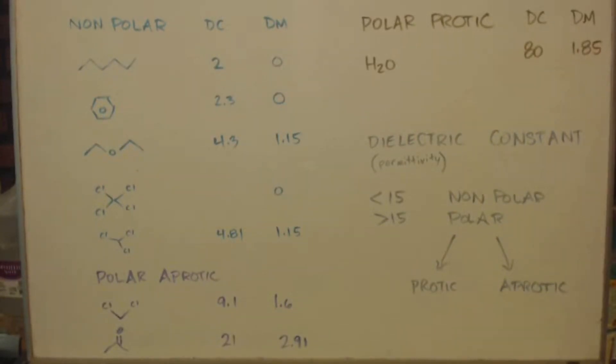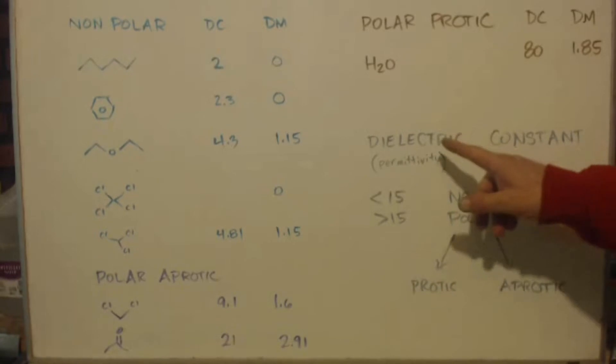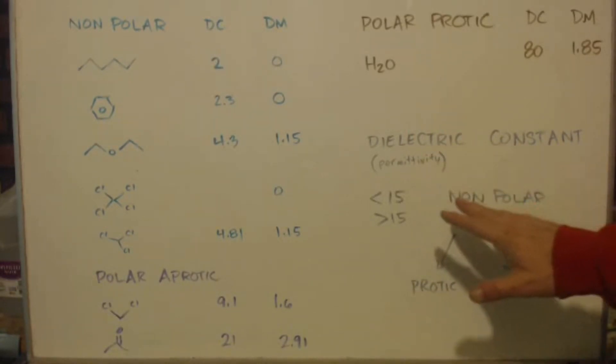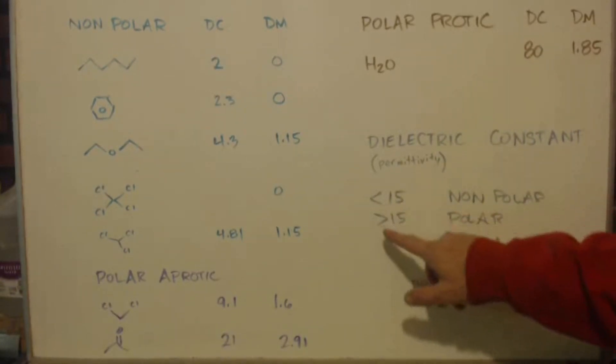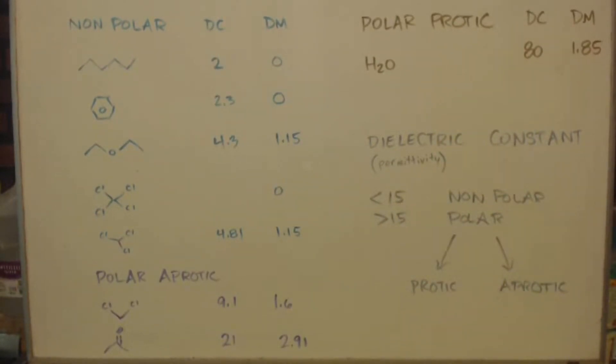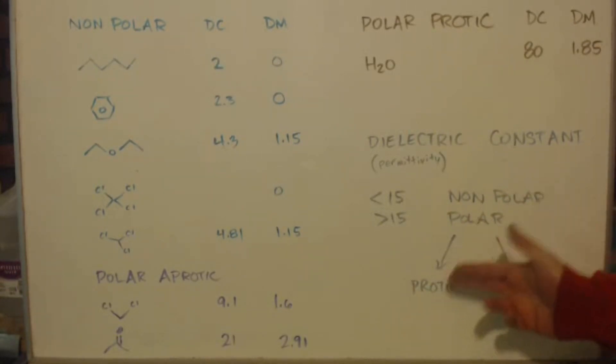So what makes a polar or non-polar solvent? Well, one of the main things, but there's a bunch of factors, is the dielectric constant or the permittivity of that solution. This is not a, there are exceptions to the rule, but anything less than 15 is considered non-polar. Anything greater than 15 is considered polar.